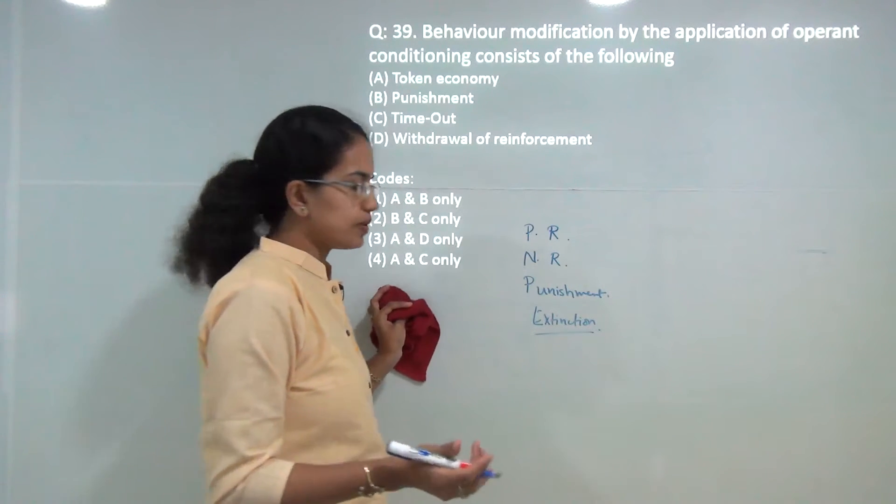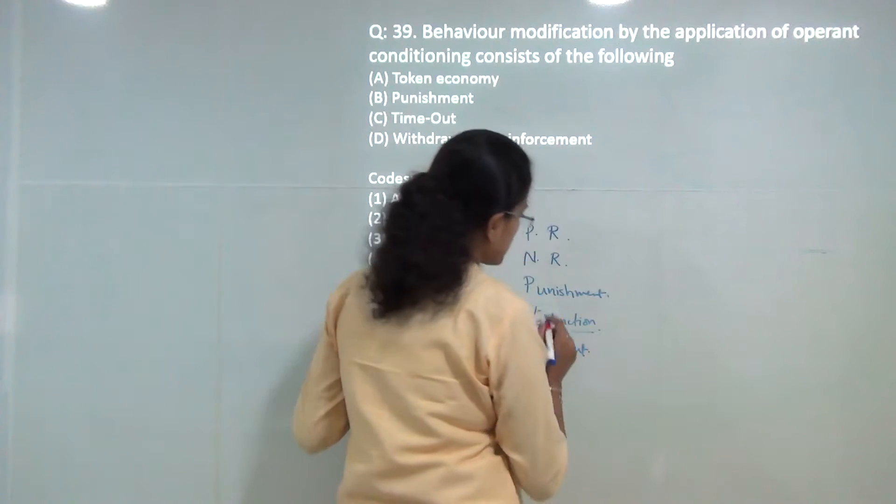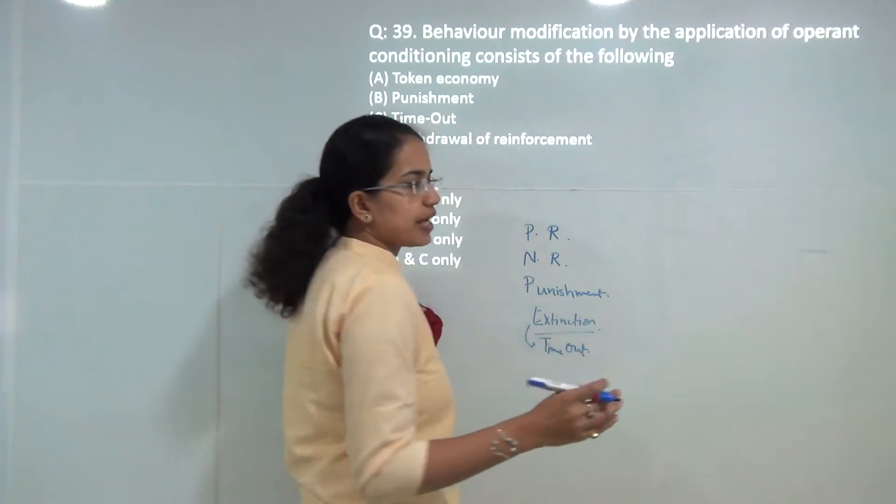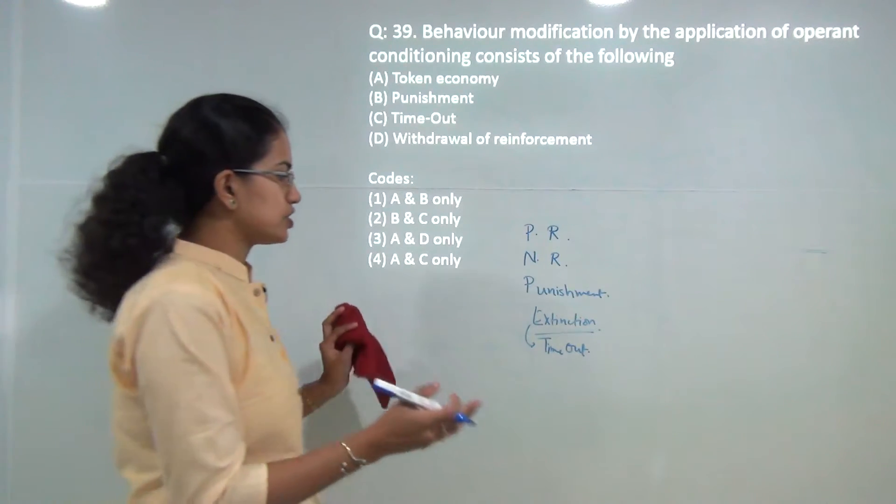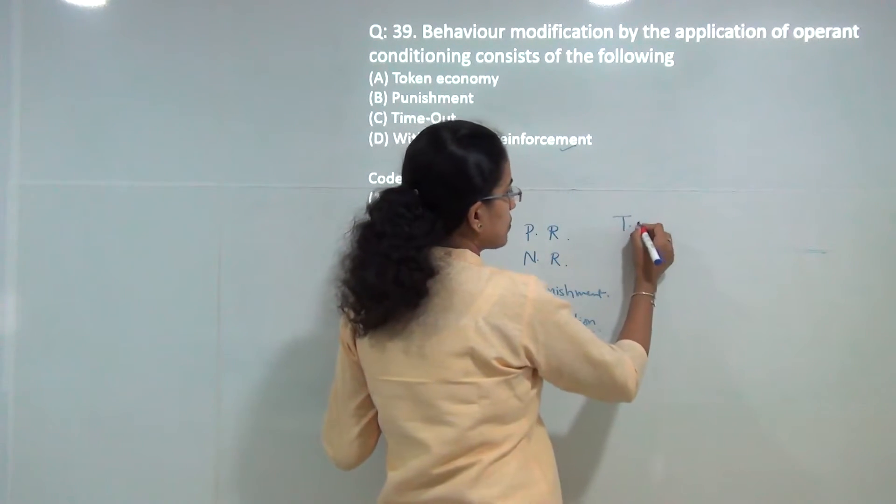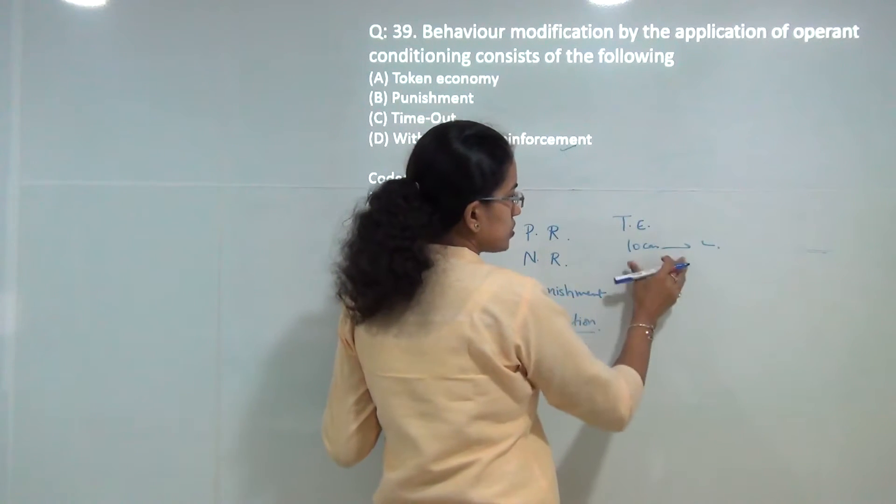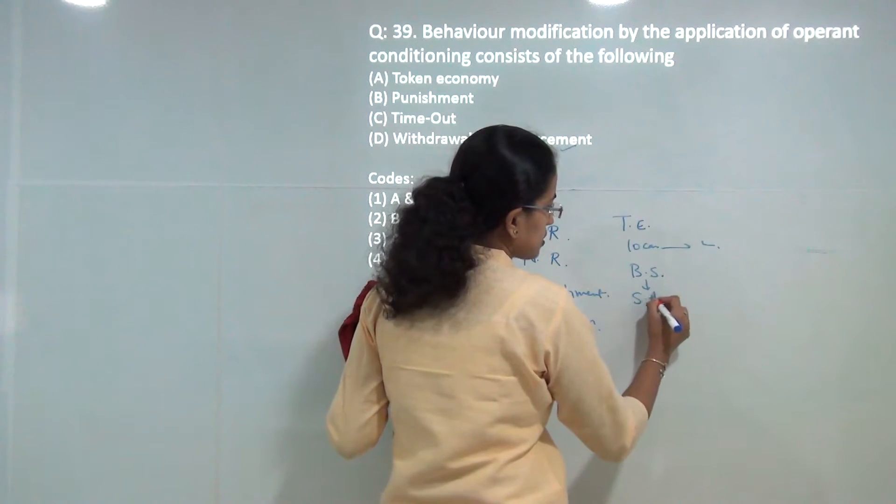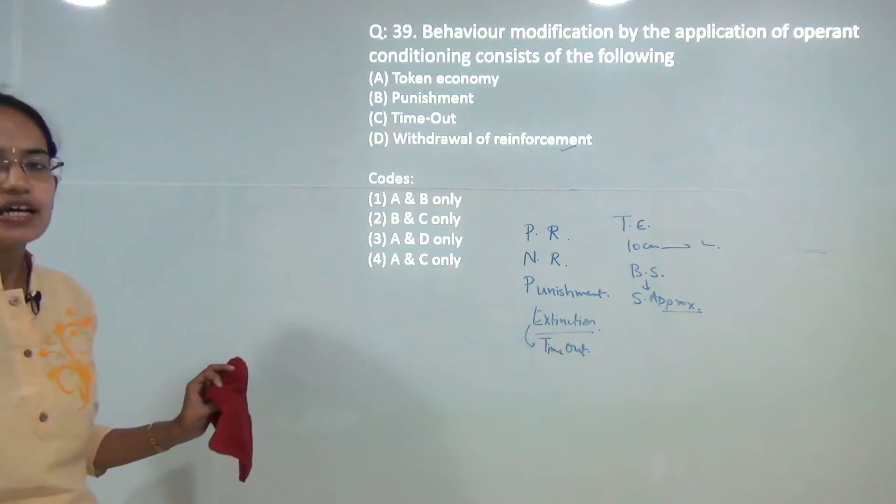Then there can be cases of extinction where you remove the stimuli, so you remove the television if a child disobeys. You have time-out which is a type of extinction, where if a child is removed from the rest of the class if he or she misbehaves. Withdrawal of reinforcement is another mechanism. You have token economy, so for every 10 cards that you collect you would be given so and so. Then you have behavior shaping where you have successive approximations. All these are types of behavior modification which are applied in operant conditioning, so all of these should be the correct answer.